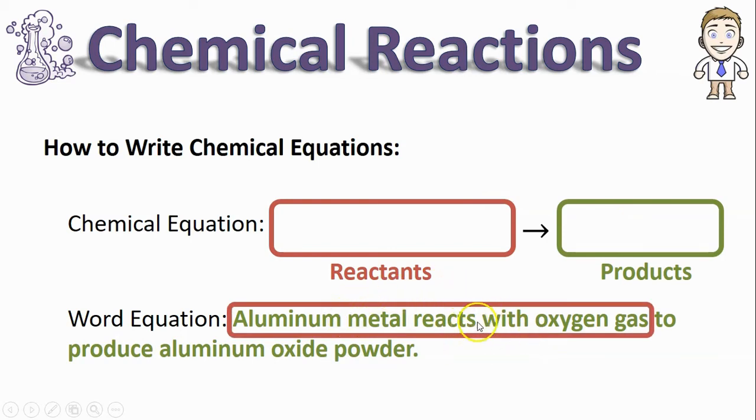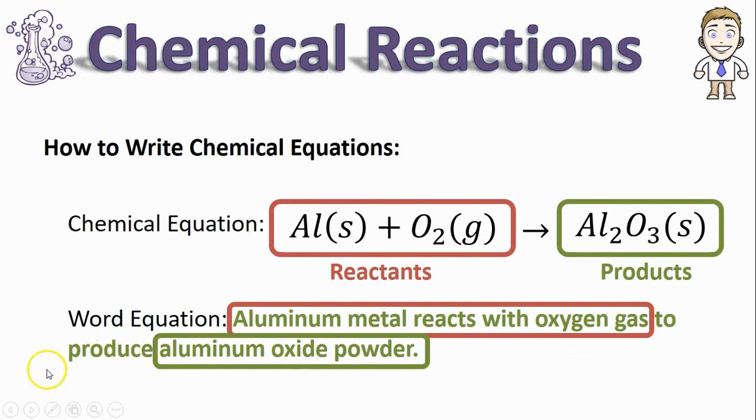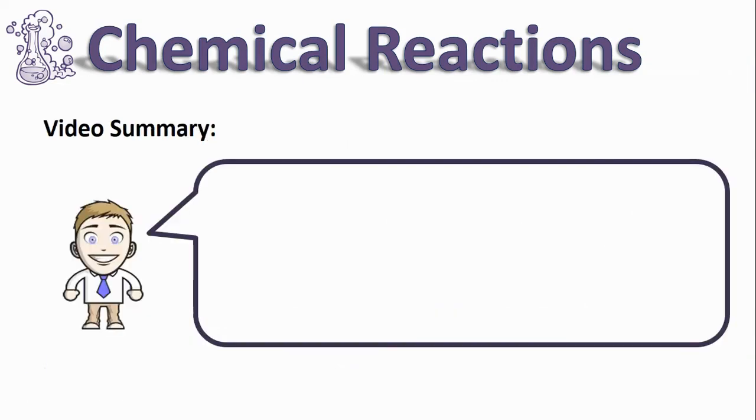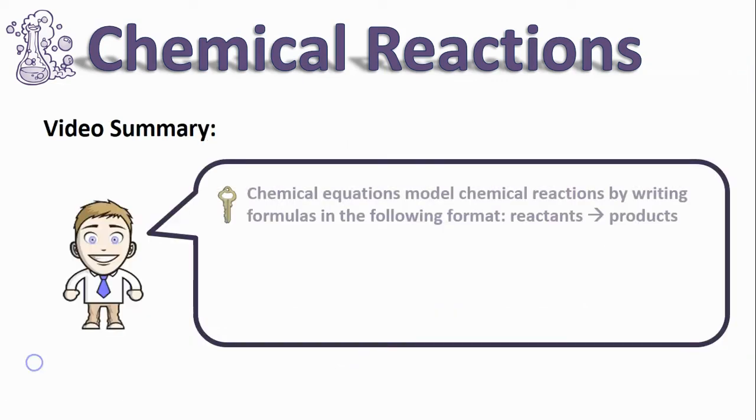So 'aluminum metal reacts with oxygen gas' tells you what two formulas to write on the reactant side. My product can be found where it says 'to produce aluminum oxide powder,' so on the right-hand side of the arrow, I put the symbol for aluminum oxide. That concludes this video on writing chemical equations.